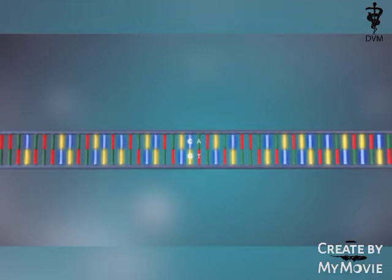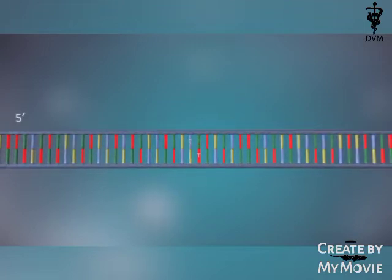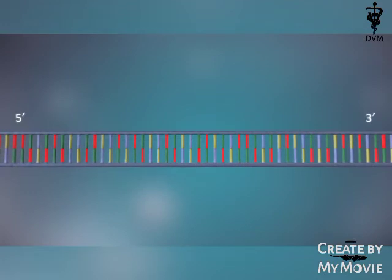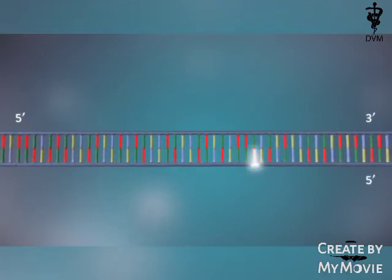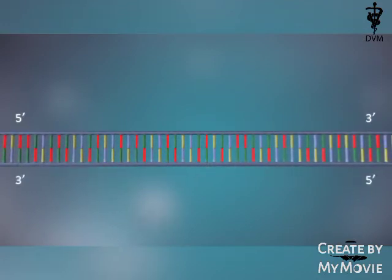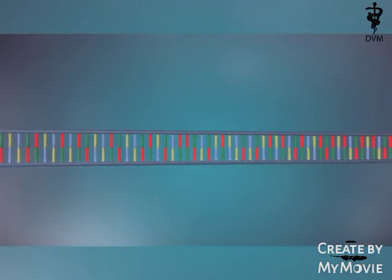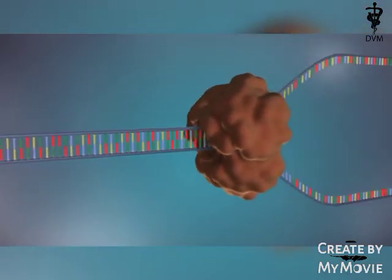The two strands are complementary, which means T and A are opposite each other on each strand. Each strand has a 5' end and a 3' end, and the two strands run in opposite directions.